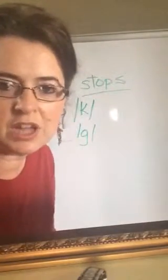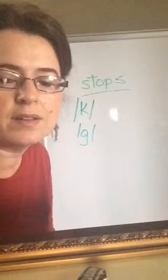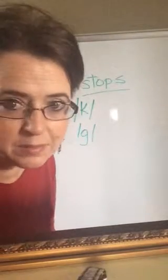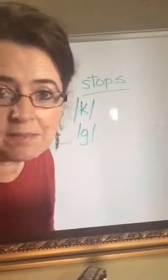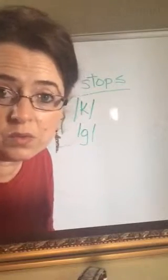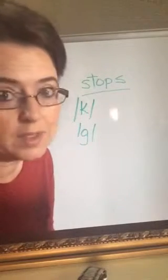All right, our last two stops we're going to talk about are k and g. Again, made at the same place with the same manner, but one is voiced and one is voiceless. So again, they're cognate pairs.